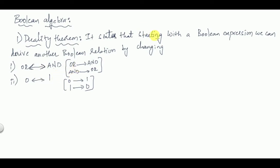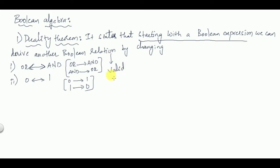So the Duality Theorem states that starting with a Boolean expression, you can derive another Boolean expression that is also a valid Boolean expression — it can be proved — by changing OR to AND, AND to OR, zero to one, and one to zero.